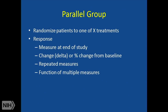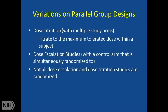Or I may look at a function of multiple measures. Body mass index, BMI, is in fact a function of your height and your weight. There are a lot of variations on parallel group designs. We sometimes, but not always, do dose titration with multiple study arms — this is becoming more popular, especially if it's not a first-in-human product. The idea is you want to titrate to the maximum tolerated dose within a given subject. Dose escalation studies with a control arm that you're simultaneously randomizing to.